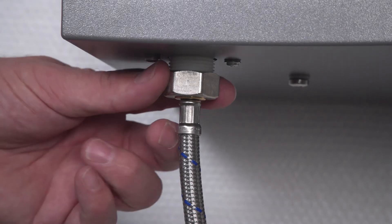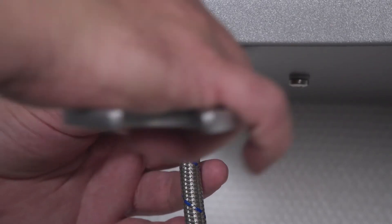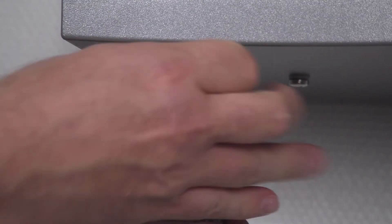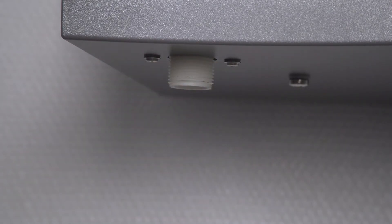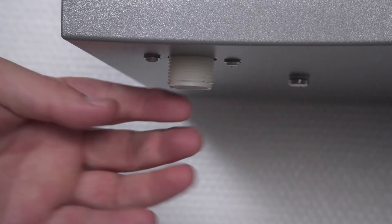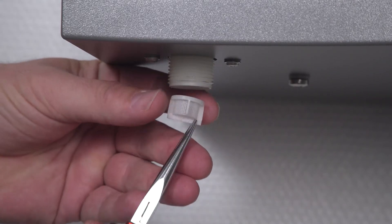Next, I check the sieve in the inlet solenoid valve. I unscrew this nut, take pointed or flat pliers and simply pull out the sieve, which is found under here, and check if there is any residue, any mineral deposits, and clean it under running water.